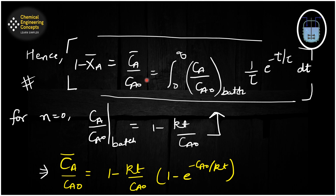This is a general expression: you can substitute any concentration ratio for any order of reaction and get the mean conversion or mean concentration ratio. For example, for a zeroth order reaction, the concentration ratio for a single batch is known, and substituting and integrating gives the final expression for the mean conversion in an MFR for a zeroth order reaction.